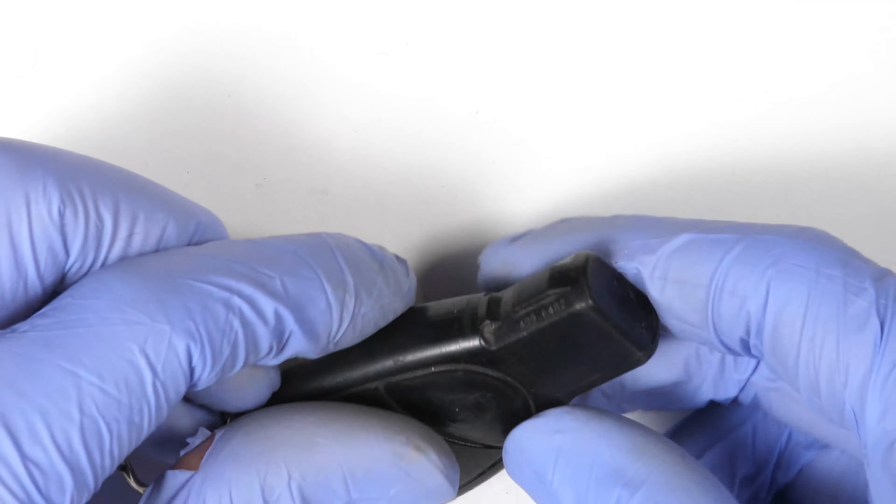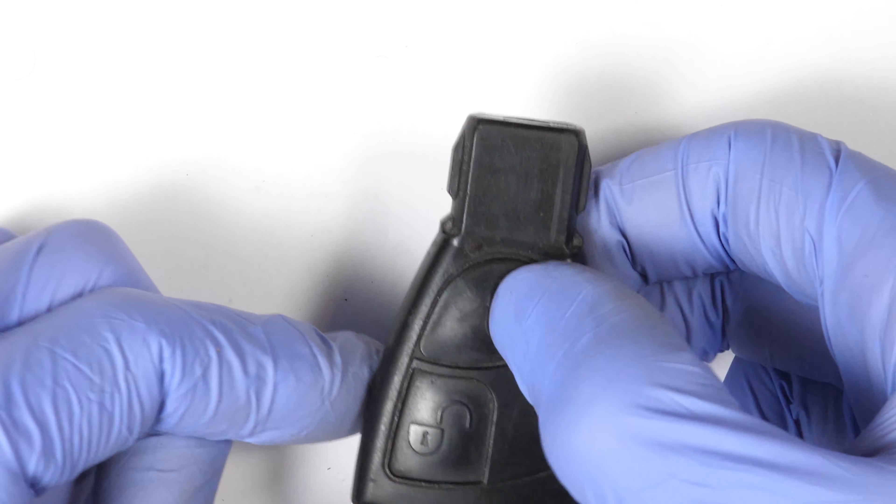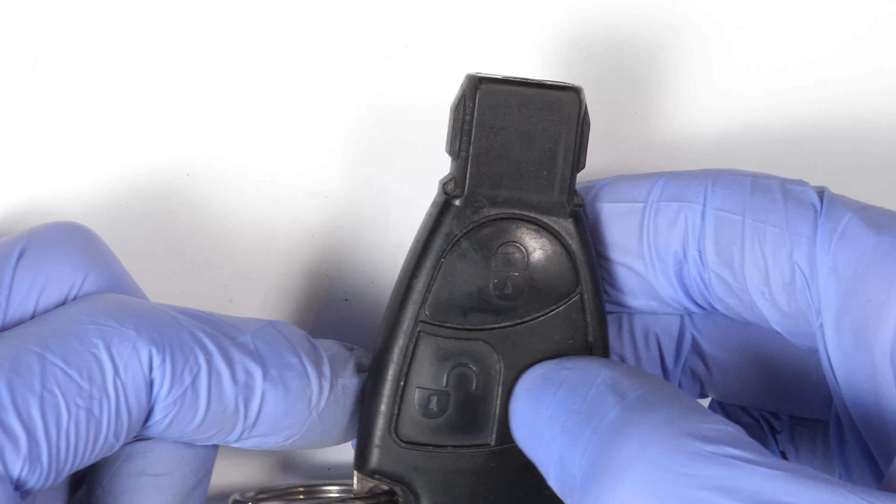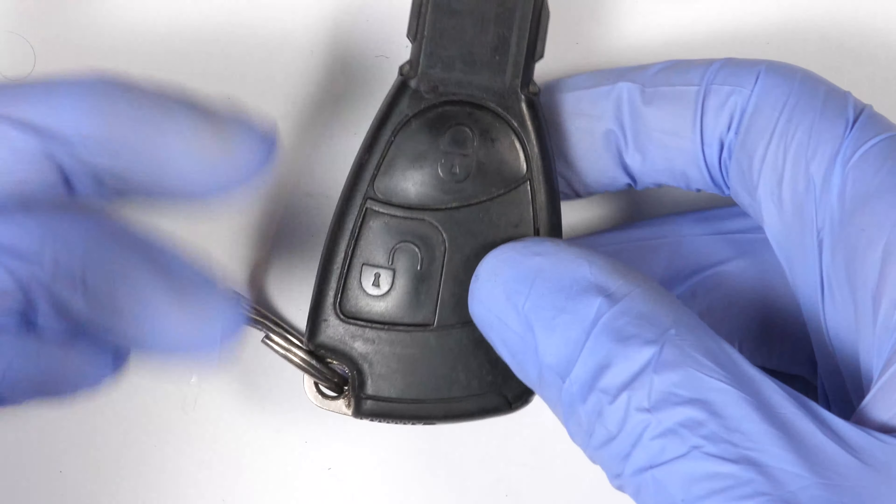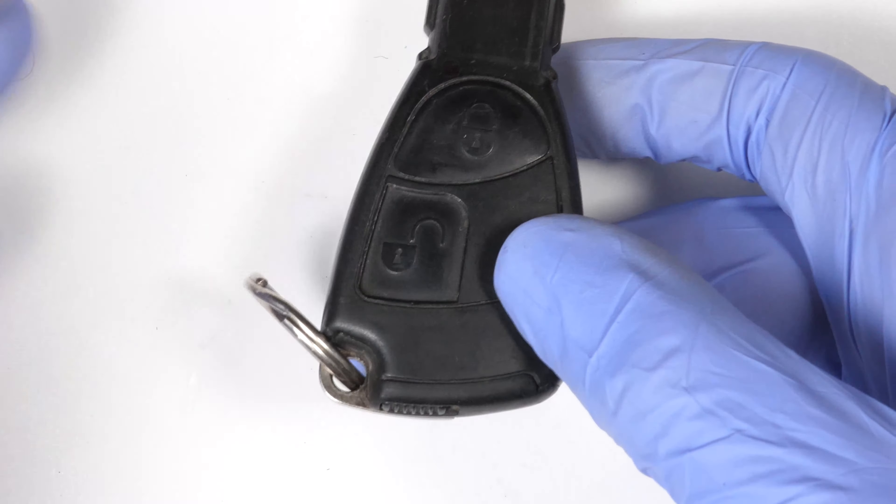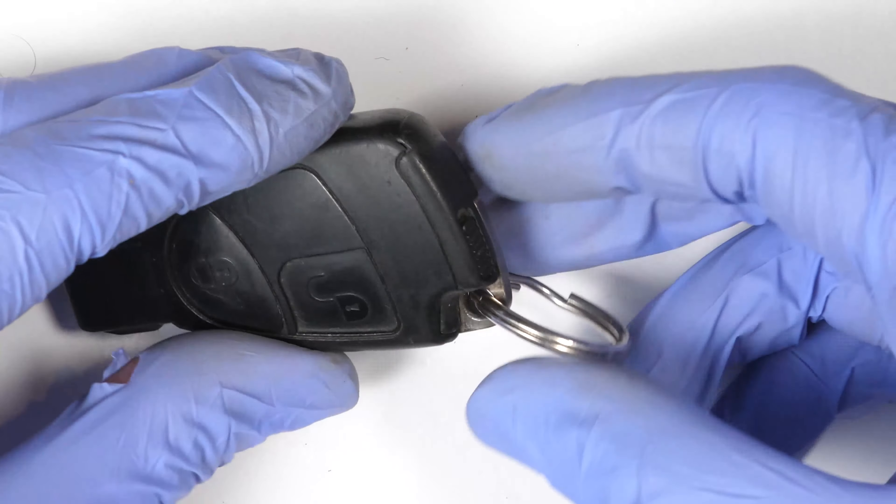The way to know if your key fob has a dead battery is to press on the button, and if the small LED here doesn't flash it means it's dead. This one is still good but I'll use it to show you how to replace the battery anyway.